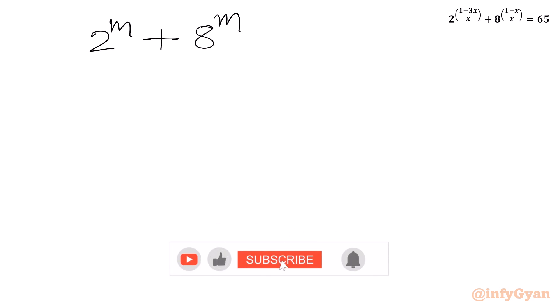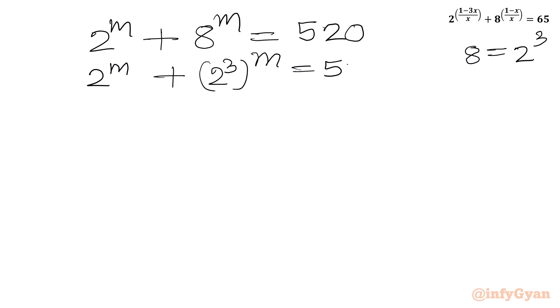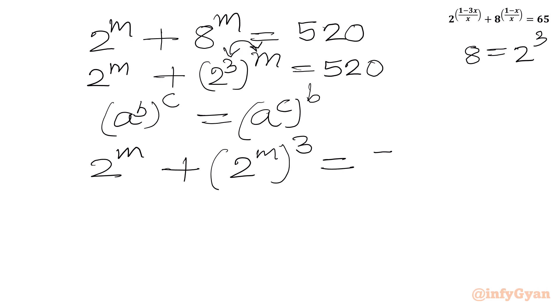So 2 raised to m plus 8 raised to m equal to 520. We know that 8 can be written as 2 cubed, so I will write: 2 raised to m plus (2 cubed) raised to the power m equal to 520. Using the exponent law, (a raised to b) raised to c equals (a raised to c) raised to b — swapping the powers 3 and m — the equation becomes: 2 raised to m plus (2 raised to m) cubed equal to 520.